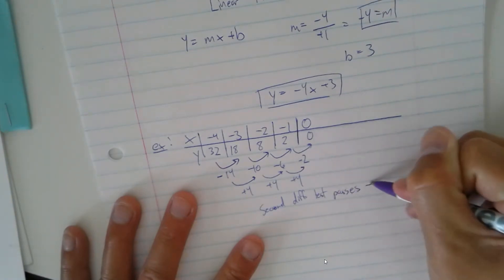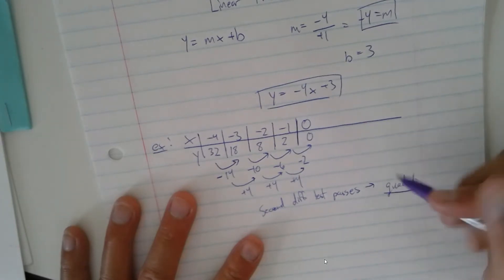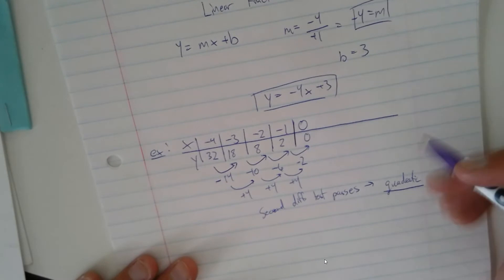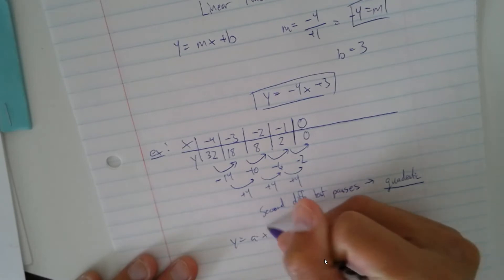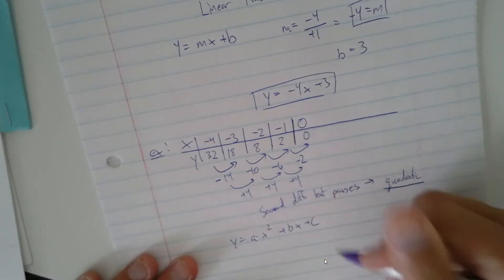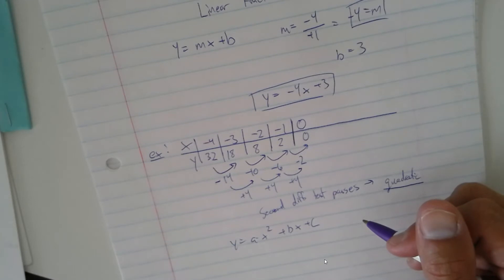So this is a quadratic formula. Quadratic. So how you would solve for this is, let's go back to the original formula, which is y equals ax squared plus bx plus c.